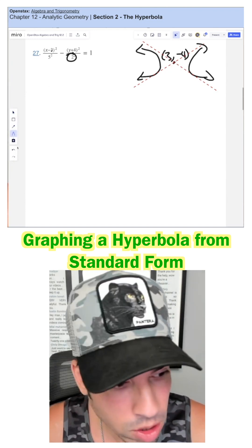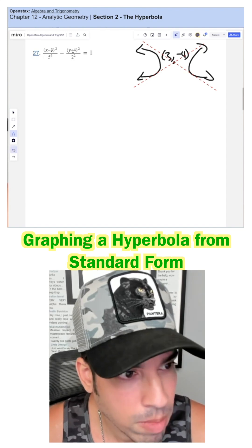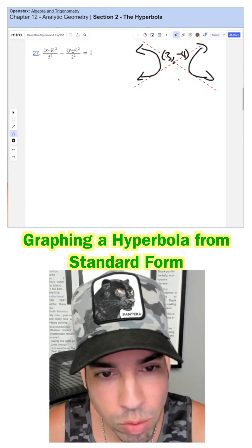This is the rise, whatever value is under the y. This is the run, meaning the slope is that over that or two fifths.